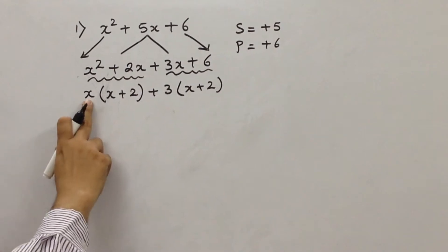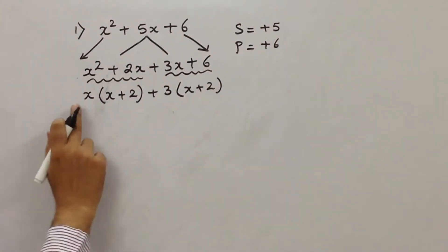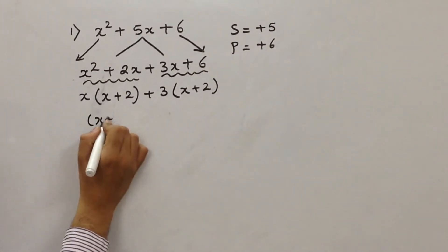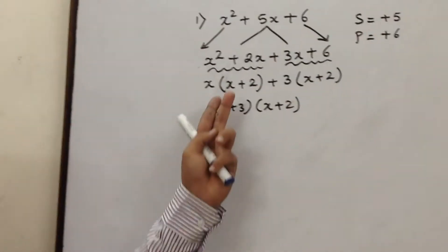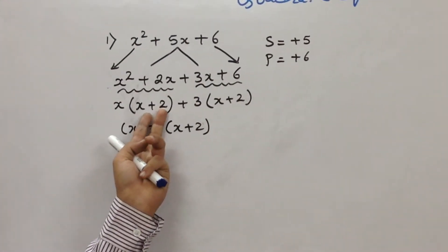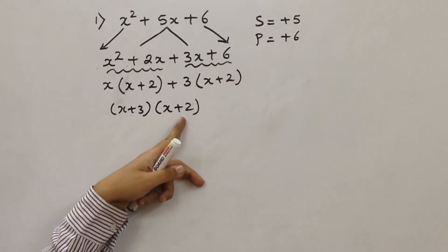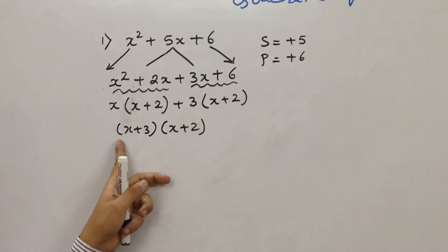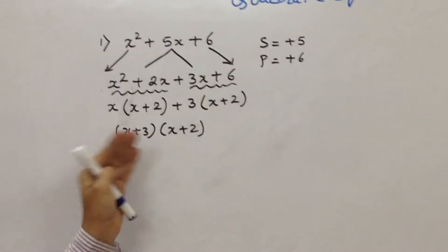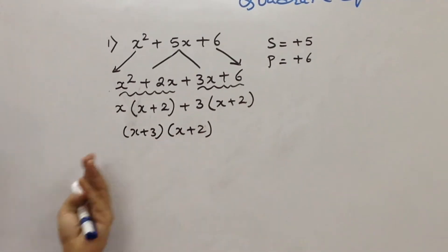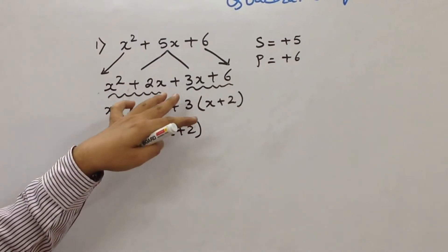Here also, x into x is x squared, x into plus 2 is plus 2x. The final answer is going to be x plus 3 into x plus 2. One simple thing to keep in mind: whatever shape the first bracket will be, the same will be the second bracket. A student can also write x plus 2 into x plus 3 — the vice versa is also correct.